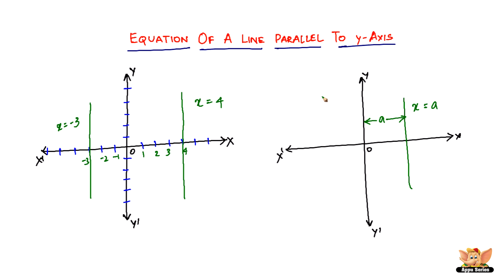and what if it is on the other side, and also the distance is a, even there, it will be x equals negative a, because it is on the negative side of the x-axis, right?